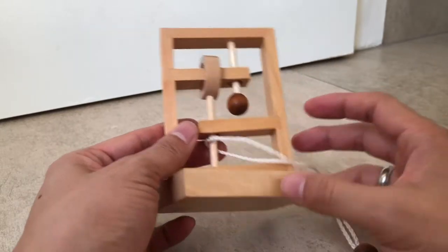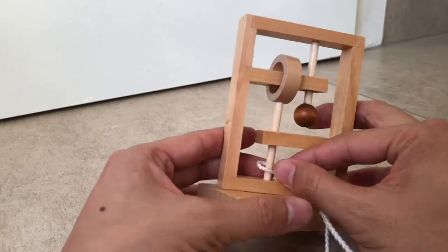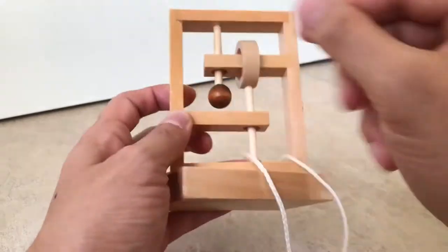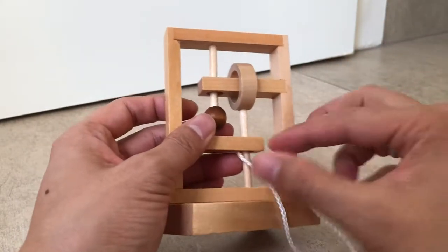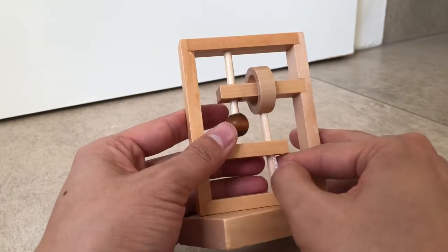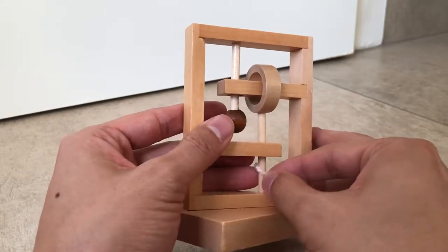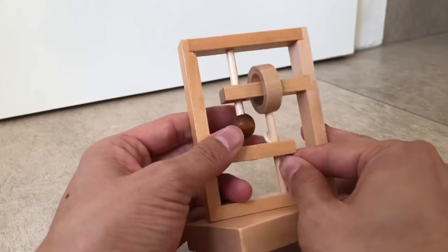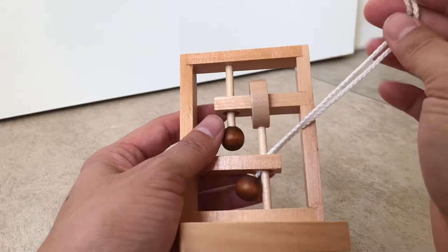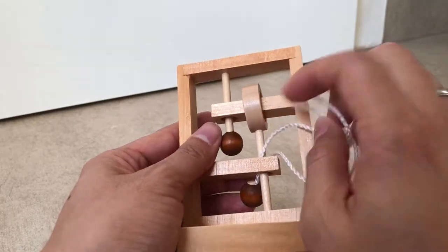This is how you do it. So spoiler alert for those that don't want to know the answer. I like to do it on this side. So first, you pretty much have to thread this end through the little hole first. So you need to thread that through. Alright, so once that's through, you thread it through this hole here.